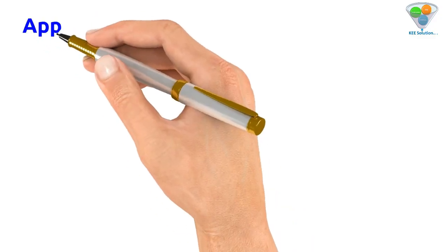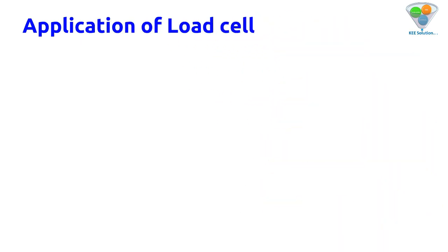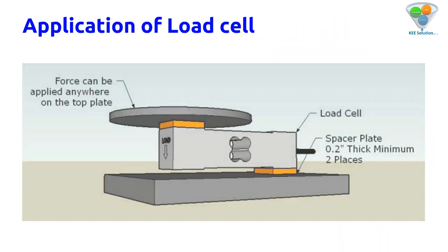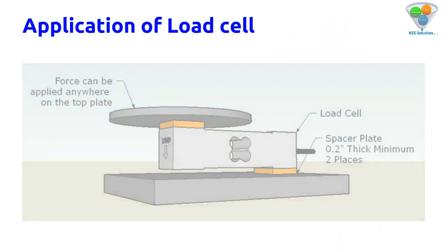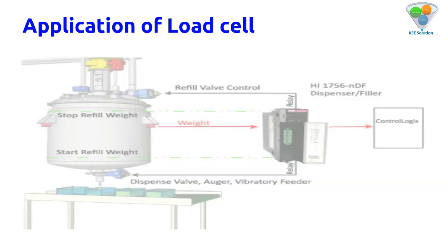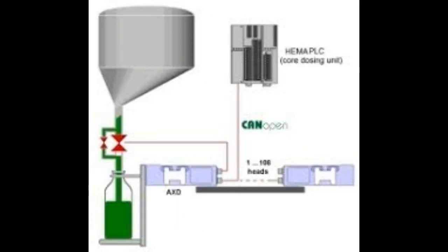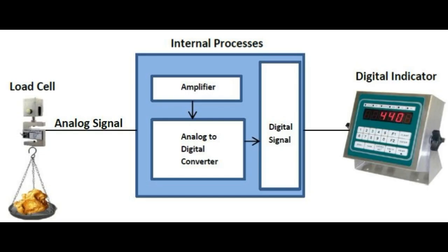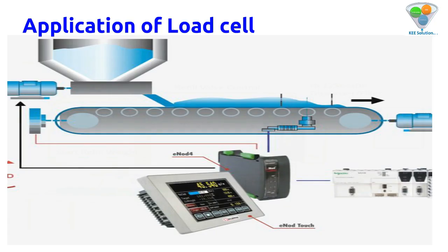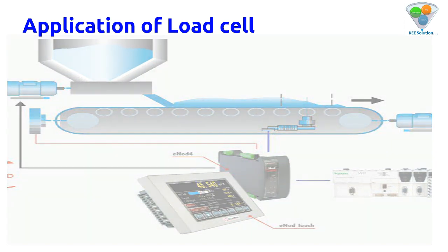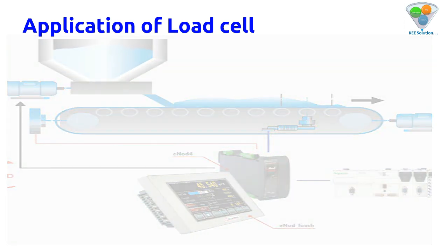Applications of load cell: a simple load cell is used for weighing general material by placing a platform on it. Another example is a tank where the actuator signal can be converted to a PLC or controller or drive to set the level of the tank.